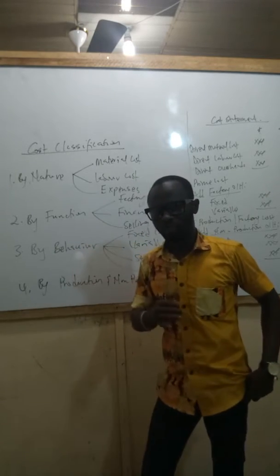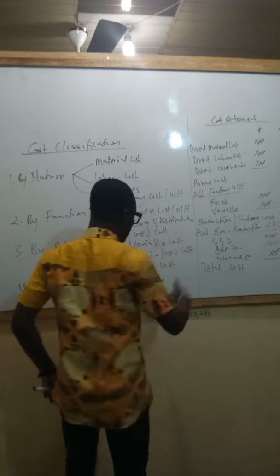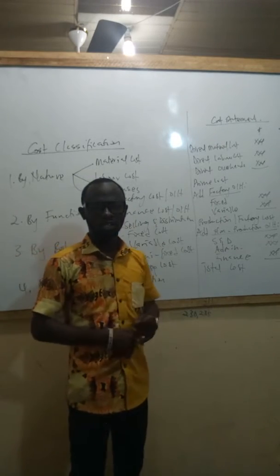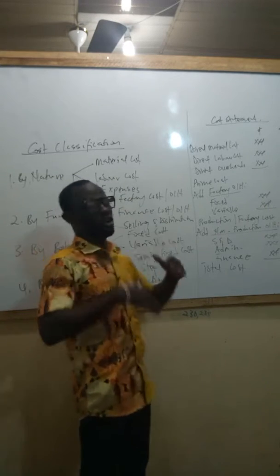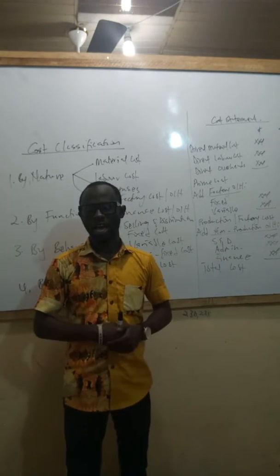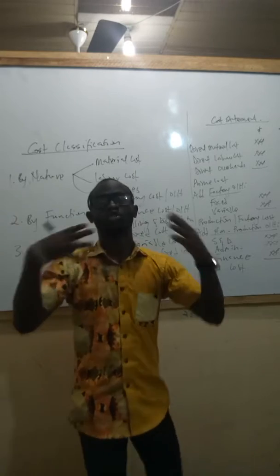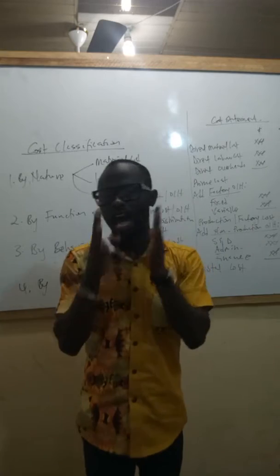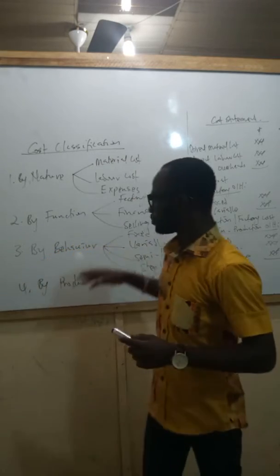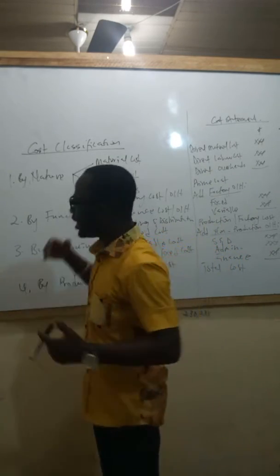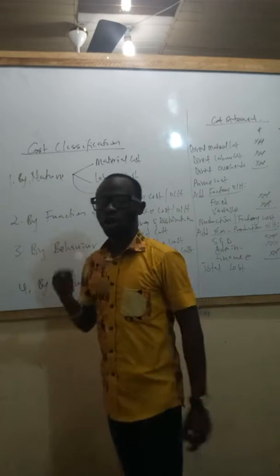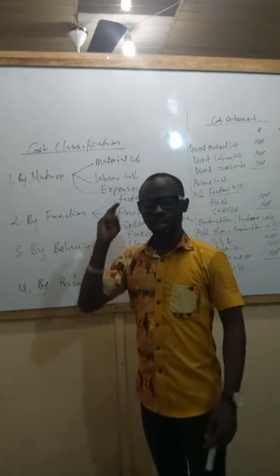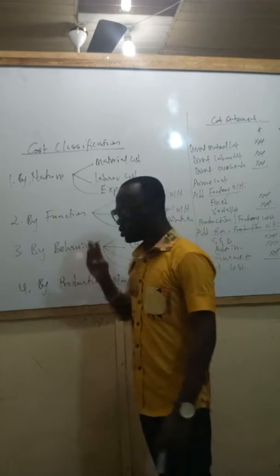Examples of non-production costs could be selling and distribution costs, finance overheads, and administration overheads. So these are the ways through which costs can be classified: nature, function, behavior, and production.